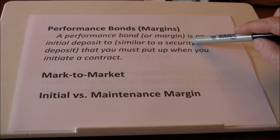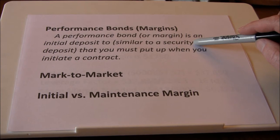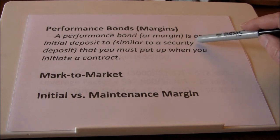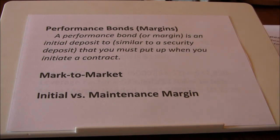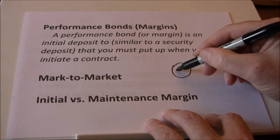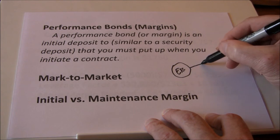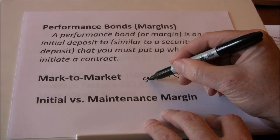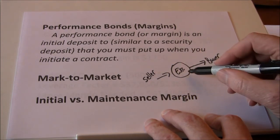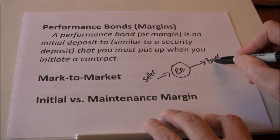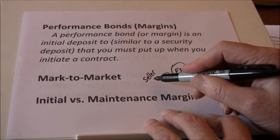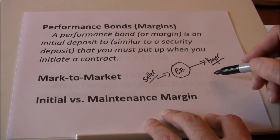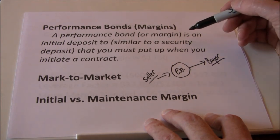The exchange acts as a middleman between the buyer and seller, guaranteeing that whoever wins in the contract — buyer or seller — gets paid. If prices drop, the seller makes a profit and the exchange guarantees they get paid. If prices go up, the buyer makes a profit and the exchange guarantees they get paid. They do this through the use of performance bonds. Contracts are marked to market on a daily basis: whenever your position gains value, money is added to your margin account at end of day; when your position loses value, money is subtracted.